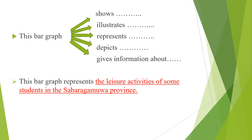Now let's see how to describe a bar graph. You can start your description like this: 'This bar graph shows...', 'This bar graph illustrates...', 'This bar graph represents...', 'This bar graph depicts...', or 'This bar graph gives information about...' For example: 'This bar graph represents the leisure activities of some students in the Sabaragamuwa Province.'